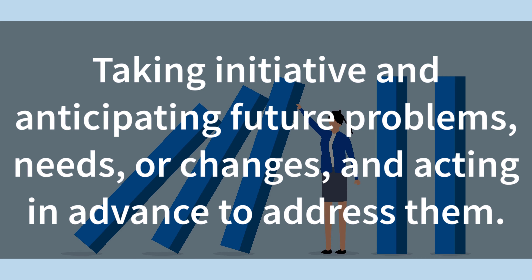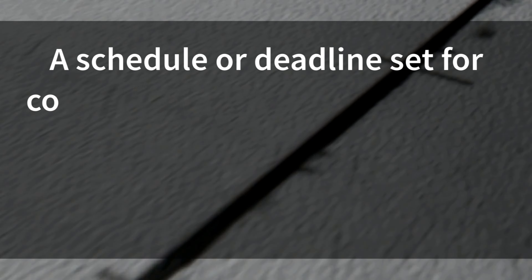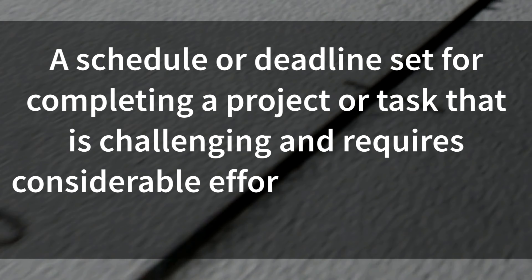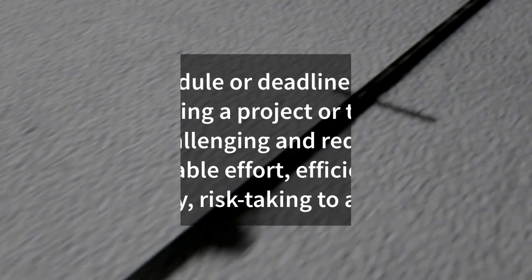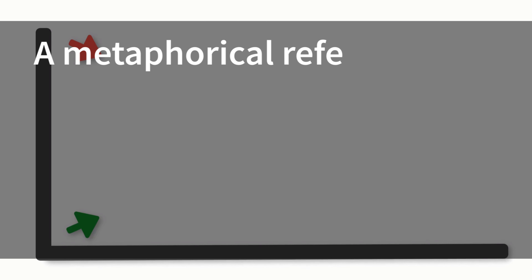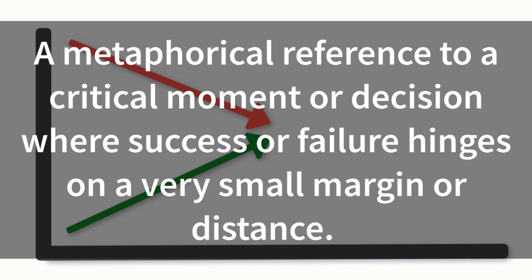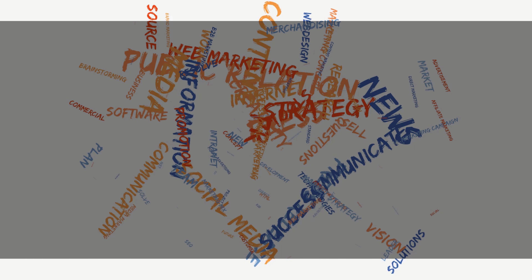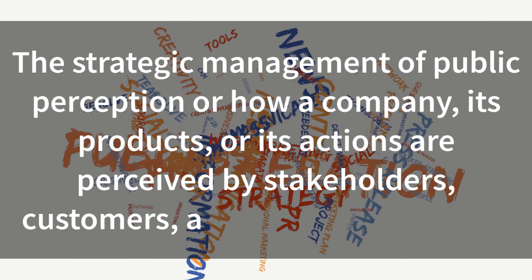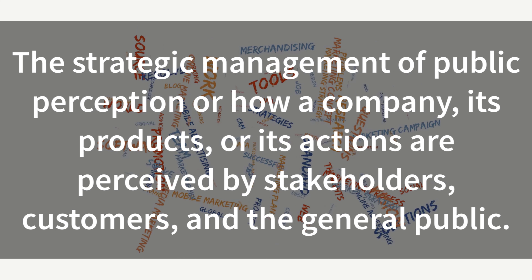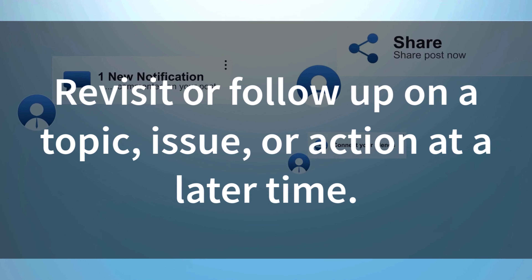Proactive: Taking initiative and anticipating future problems, needs, or changes, and acting in advance to address them. Aggressive Timeline: A schedule or deadline set for completing a project or task that is challenging and requires considerable effort, efficiency, and possibly risk-taking to achieve. Fourth and Inches: A metaphorical reference to a critical moment or decision where success or failure hinges on a very small margin or distance. Manage the Optics: The strategic management of public perception, or how a company, its products, or its actions are perceived by stakeholders, customers, and the general public. Circle Back: Revisit or follow up on a topic, issue, or action at a later time.